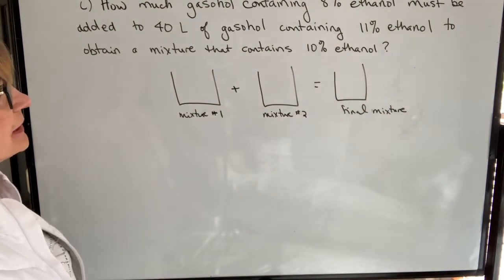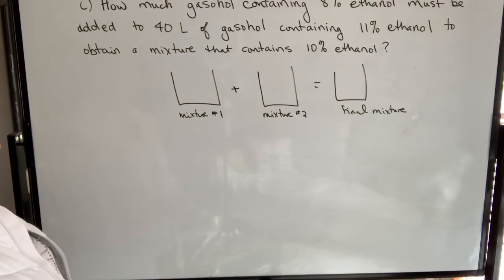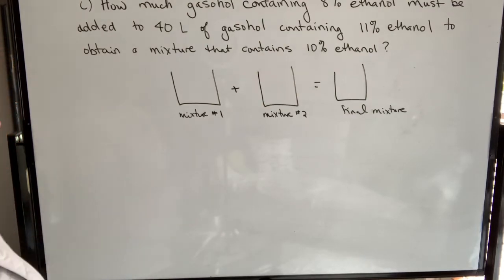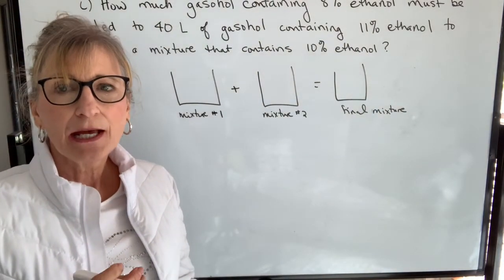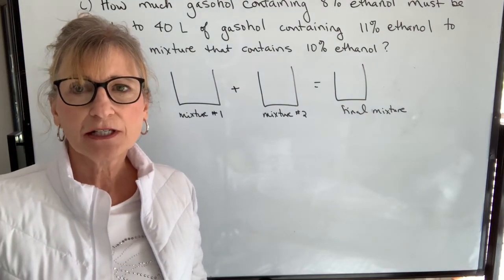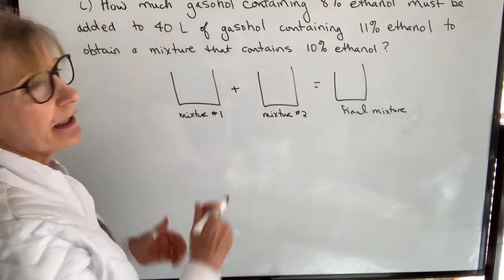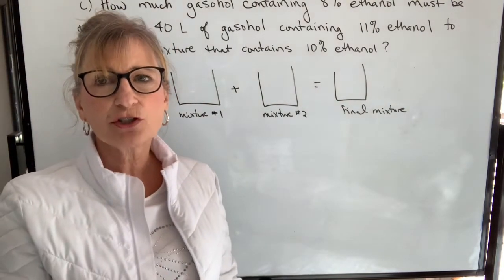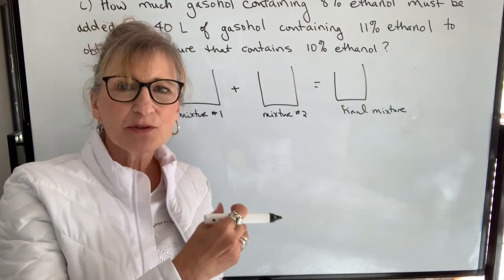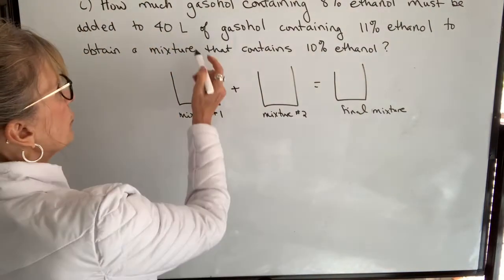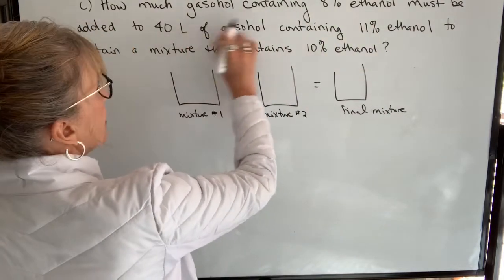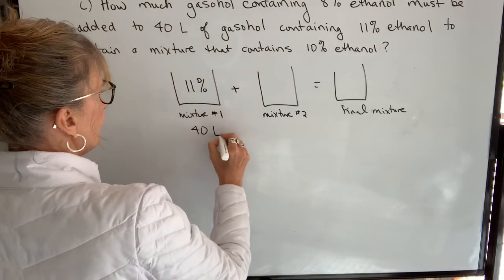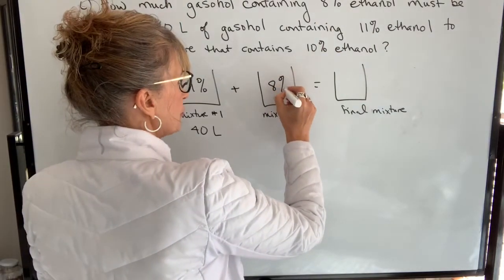Our first example says: how much gasohol containing 8% ethanol must be added to 40 liters of gasohol containing 11% ethanol to obtain a mixture that contains 10% ethanol? There's a lot of information there and people tend to get very confused. One strategy I find very helpful in mixture questions is to make a diagram — I'm basically taking two mixtures and adding them to get a final mixture. We're starting off with 40 liters of an 11% ethanol mixture.